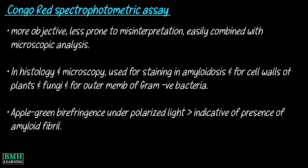In histology and microscopy, Congo Red is used for staining in amyloidosis, for the cell walls of plants and fungi, and for the outer membrane of gram-negative bacteria. Apple-green birefringence of Congo Red stained preparations under polarized light is indicative of the presence of amyloid fibrils.